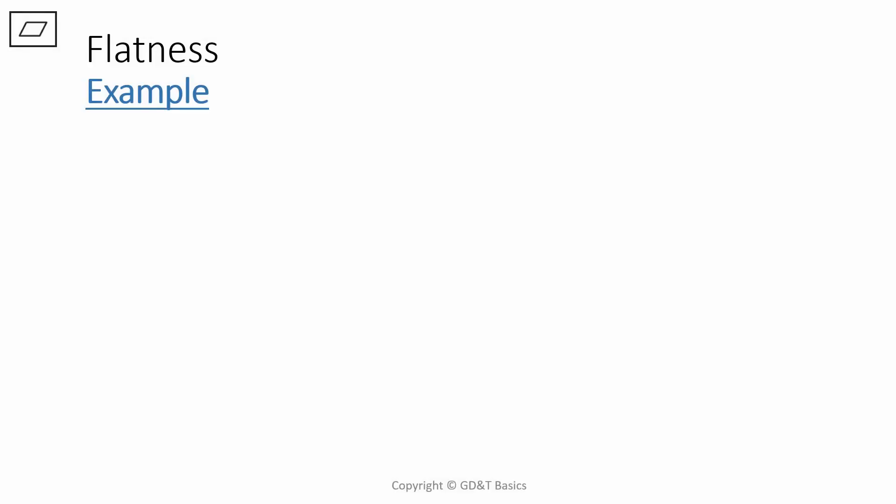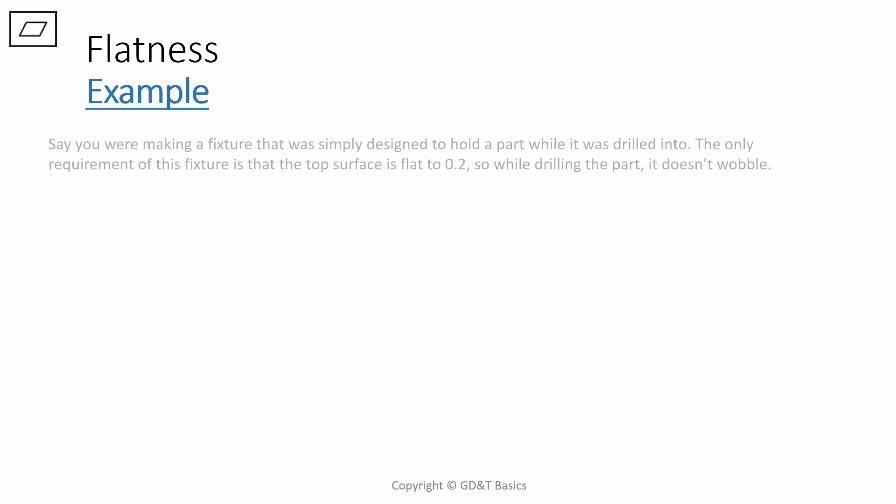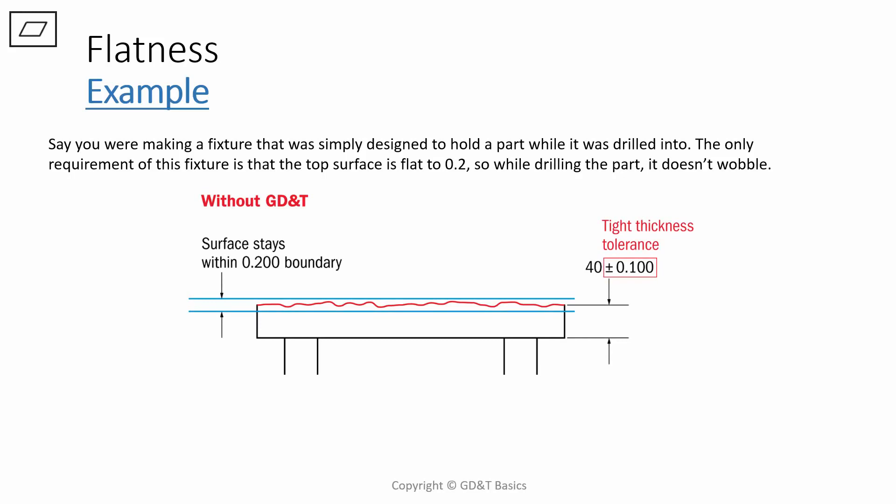Let's go over a quick example of flatness to show how it is beneficial over just using a simple coordinate system. Say you were making a fixture that was simply designed to hold a part flat while it was being drilled into. The only requirement of this fixture is that the top surface is flat to 0.2, so that when you're drilling into the part it doesn't wobble. Without using the flatness symbol, the only way to hold the table to the flat dimension that you require is to hold your thickness tolerance to plus or minus 0.1. This will make sure that the surface stays within the 0.2 boundary.